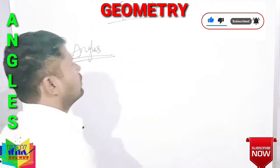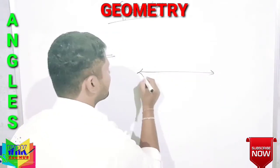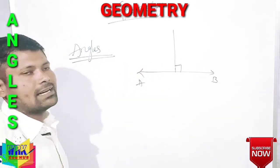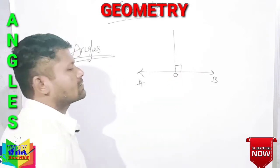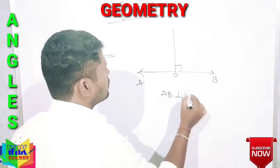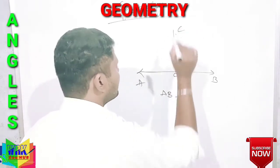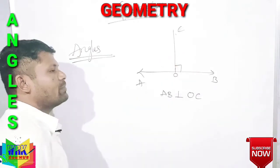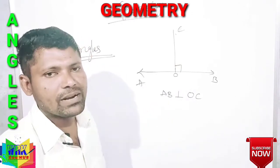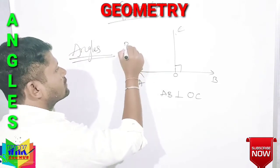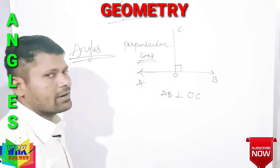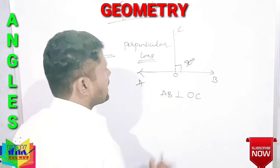What are perpendicular lines? Suppose this is line A and this is B. Draw one line at a right angle to AB — it meets at a point O. You can say AB is perpendicular to OC. These two lines are said to be perpendicular to each other. If they are perpendicular to each other, the angle is 90 degrees.